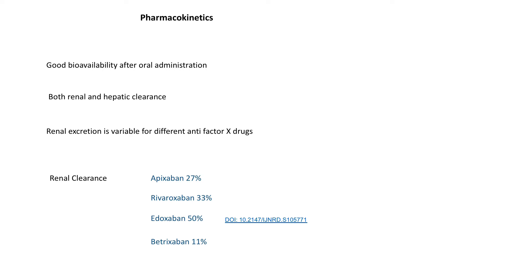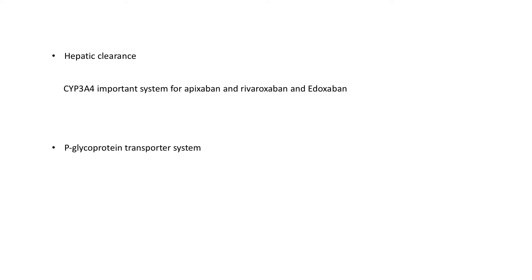In the presence of chronic kidney disease, we need to reduce the dose beyond a certain level of creatinine clearance, and we need to stop these drugs beyond a further threshold. There is regional variation in the creatinine clearance levels at which dose reduction and discontinuation are required. These drugs are also metabolized in the liver; however, drug interactions have less effect on these drugs compared to warfarin.